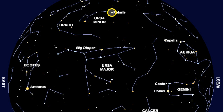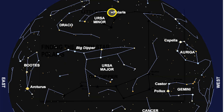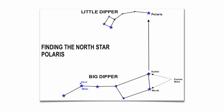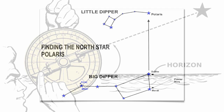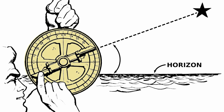Polaris is the only star in the nighttime sky that doesn't move. The rest of the stars travel around Polaris in a counterclockwise direction. To find it, locate the Big Dipper — the two front stars of the Big Dipper will always point to Polaris. Polaris is the last star in the handle of the Little Dipper, so it's quite easy to find. Once you find that star, you can use an instrument called an astrolabe to figure out the angle from the horizon up to the star and determine the latitude you're on.